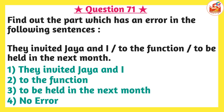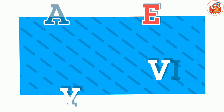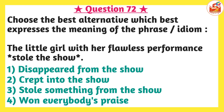Next question is again an error detection question. Find the incorrect part of the sentence: 'They invited Jaya and I to the function to be held in the next month.' Options are: option one, 'They invited Jaya and I'; option two, 'to the function'; option three, 'to be held in the next month'; option four, no error. When someone is used as an object, we use 'me,' not 'I.' We say 'they invited me,' not 'they invited I.' 'I' is used as the subject. So here, 'Jaya and I' should be 'Jaya and me,' making option one the incorrect part.